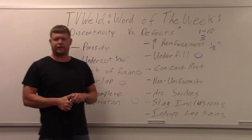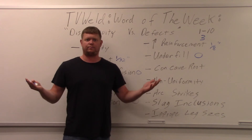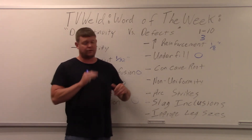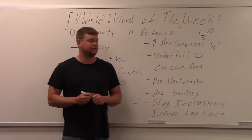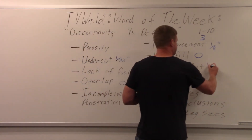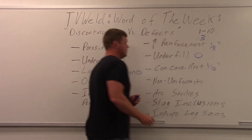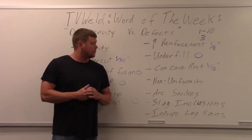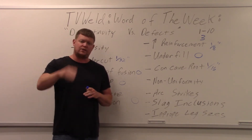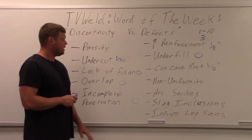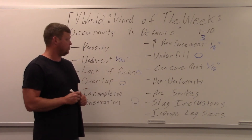Underfill is zero — that's rejectable. The thing about underfill is if you're doing a groove joint that's not filled in all the way, you just put another couple beads on, so it's an easy one to fix. Concave root — you're allowed a sixteenth of an inch. That usually happens when you're doing overhead, but it can happen in other positions as well. If it's over a sixteenth of an inch, that discontinuity becomes a defect.